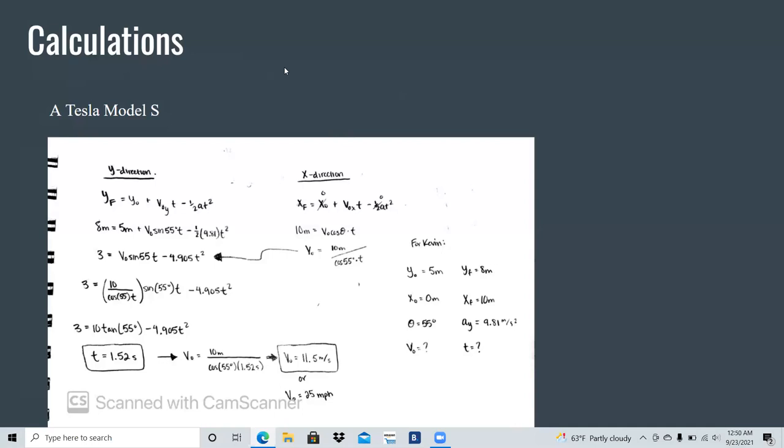We calculated the time, and using the time, we were able to calculate the initial velocity, which was 11.5 meters per second, or 25 miles per hour for the car for my projectile motion.